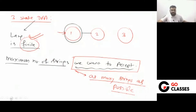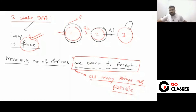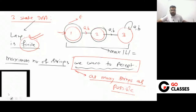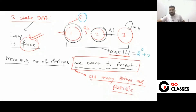If I want to accept as many strings as possible, I can make state 1 final — this accepts the empty string. I put AB transitions to state 2, and make state 2 also final. I put AB to state 3, but that's it. For three states, maximum strings you can accept is 2^0 + 2^1 = 3. Maximum 3 strings you can accept while keeping the language finite.